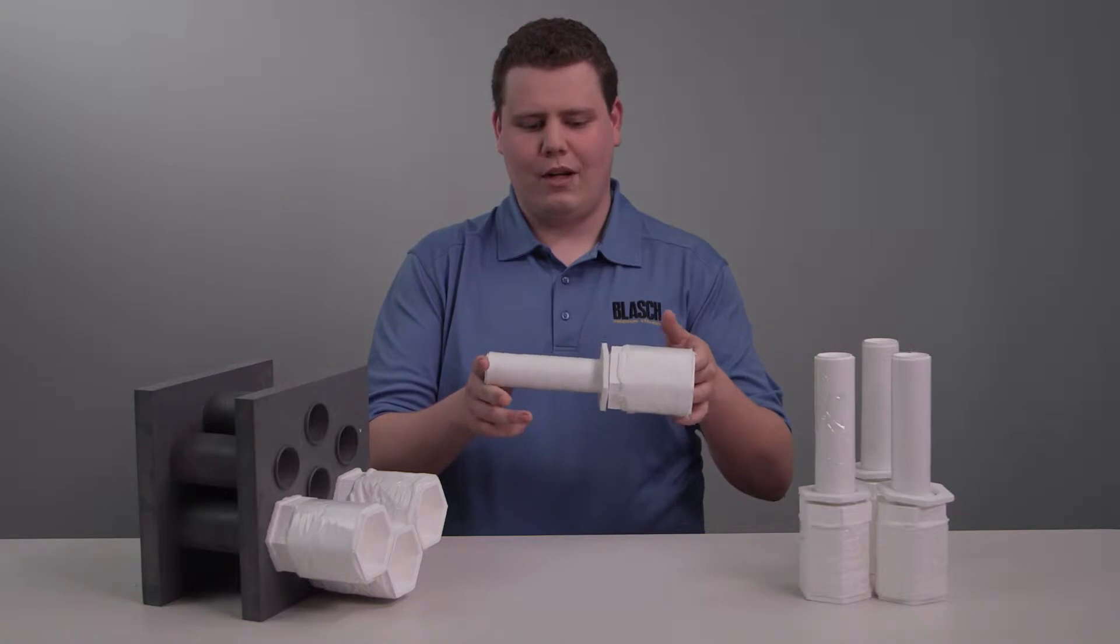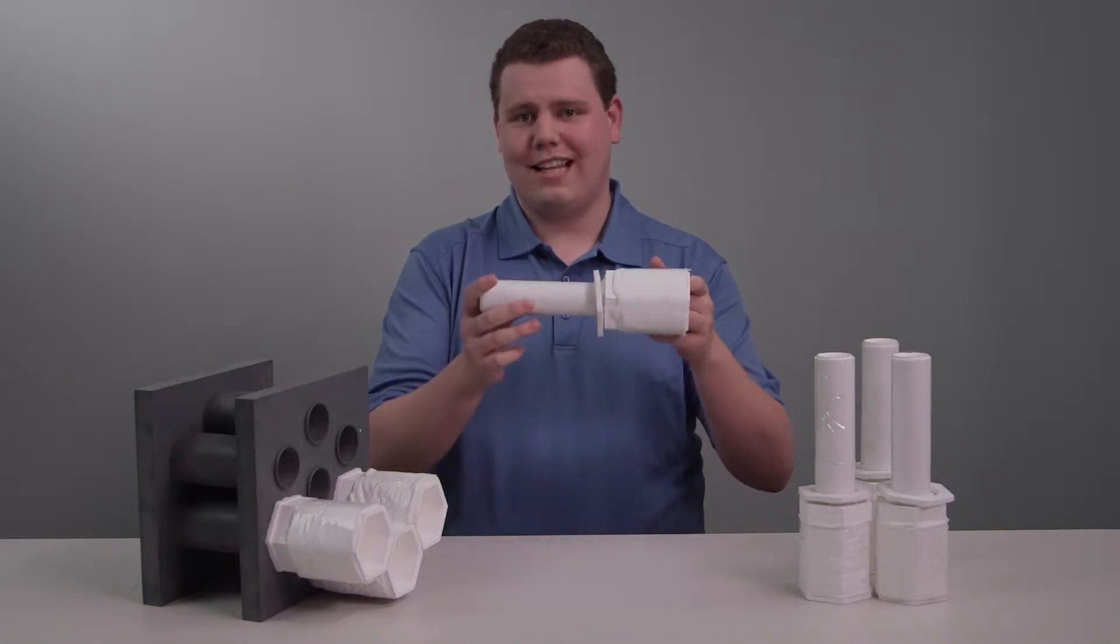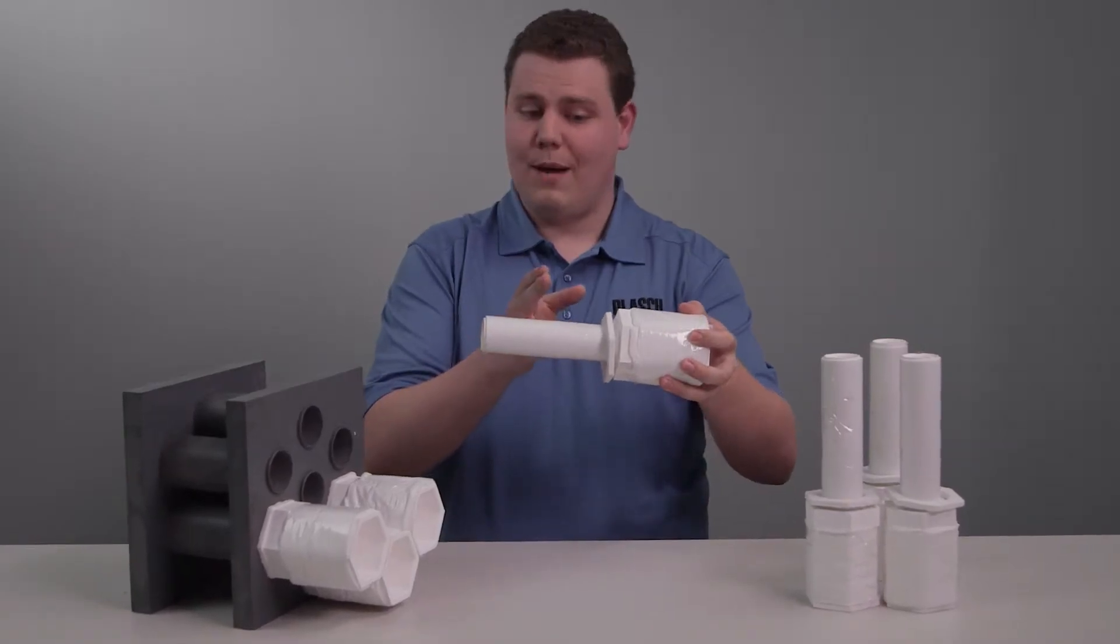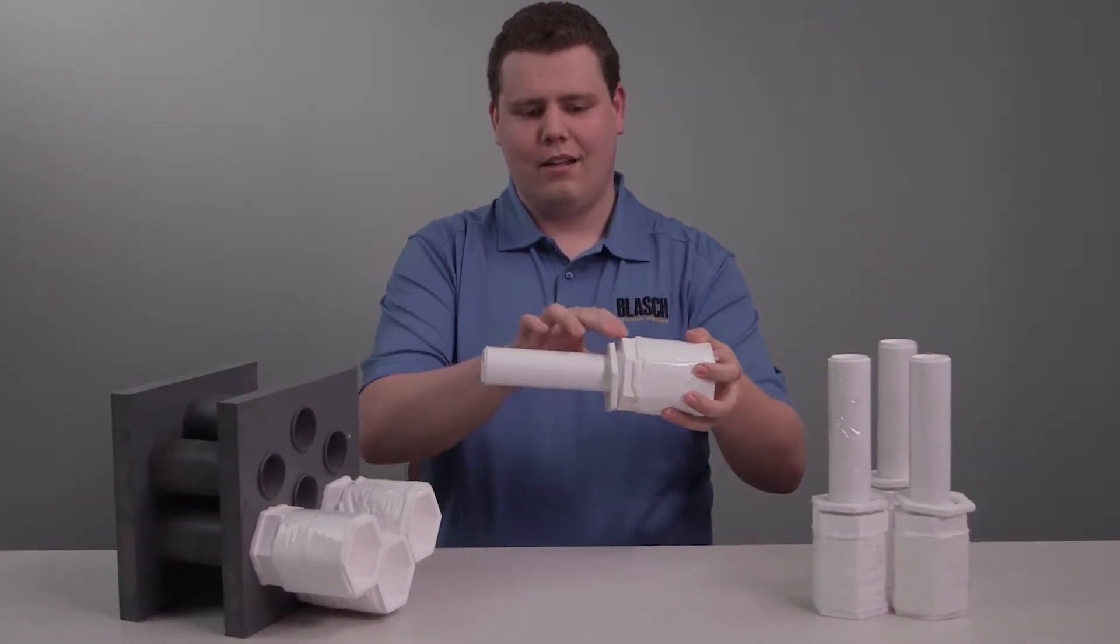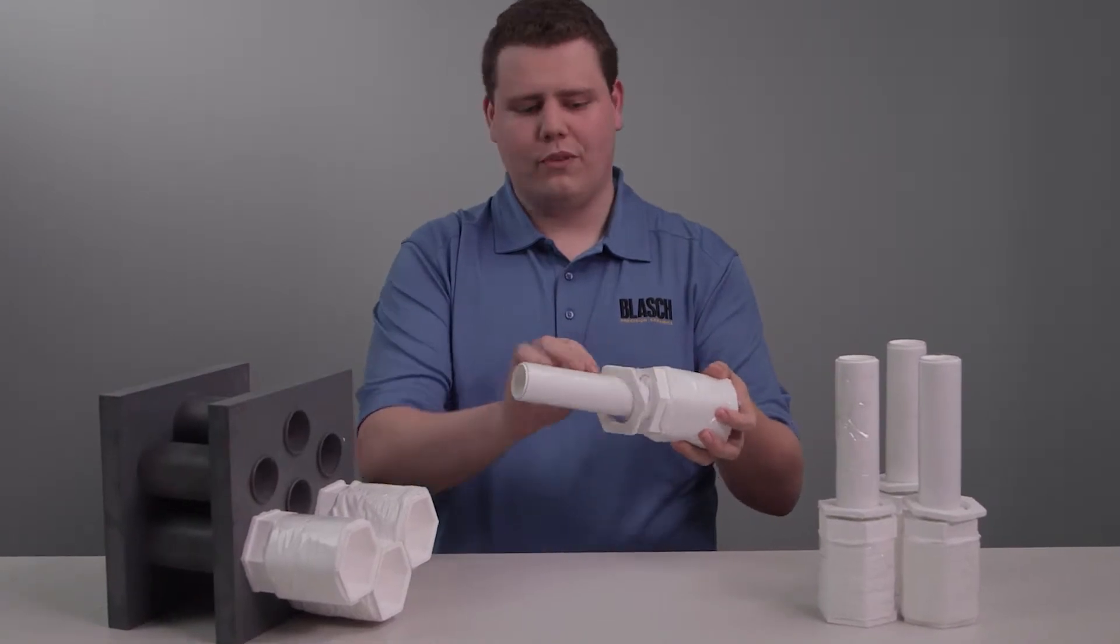This is our patented hex ferrule. This is exactly how you're going to get it out of the box. It's going to have all the wrapping on it that it needs: fiber wrap on the stem, the head, a fiber rope to sit in the groove, and a fiber gasket as well.